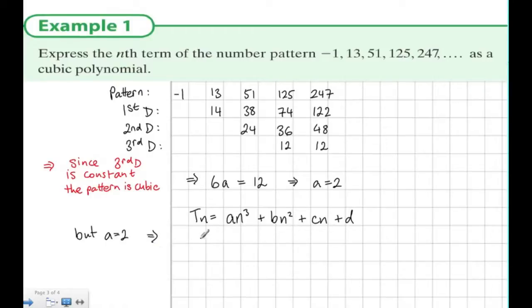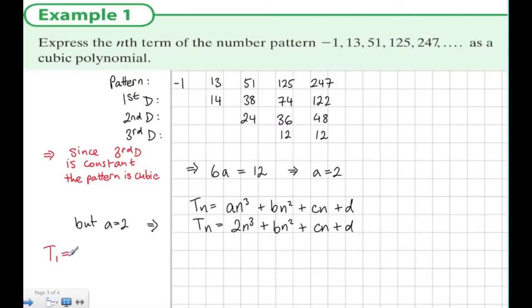Now we know a is 2, so we could write that term n is equal to 2n³ + bn² + cn + d. But we need to work out b, c, and d.